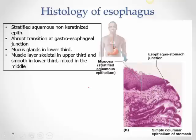In the histology of the esophagus, the epithelium is stratified and non-keratinized because it is prone to friction from food of all temperatures and textures. At the gastroesophageal junction, there is an abrupt transition to columnar epithelium. The stomach is columnar and the esophagus is stratified squamous non-keratinized — this abrupt junction is visible histologically.